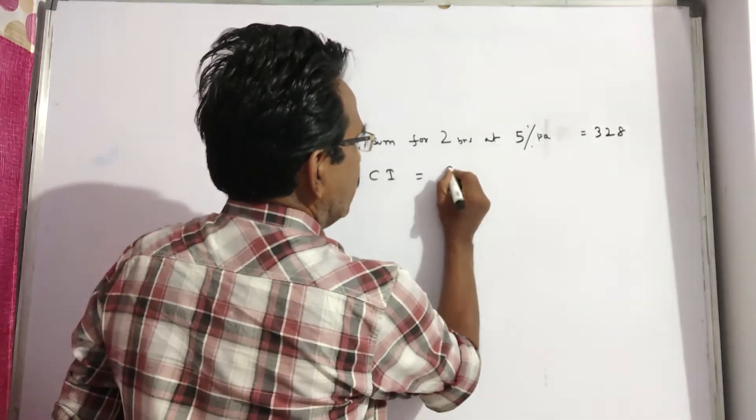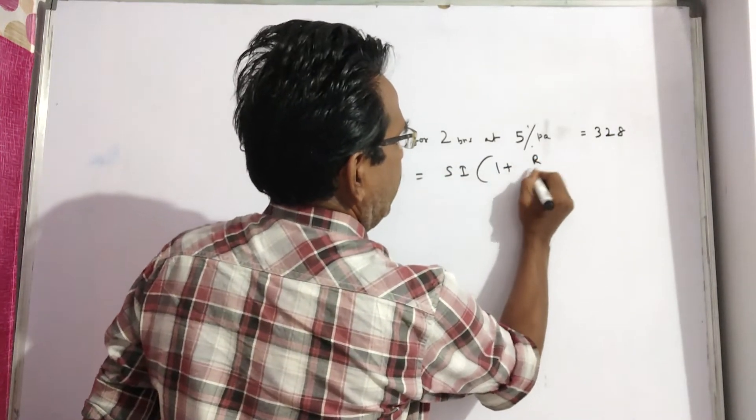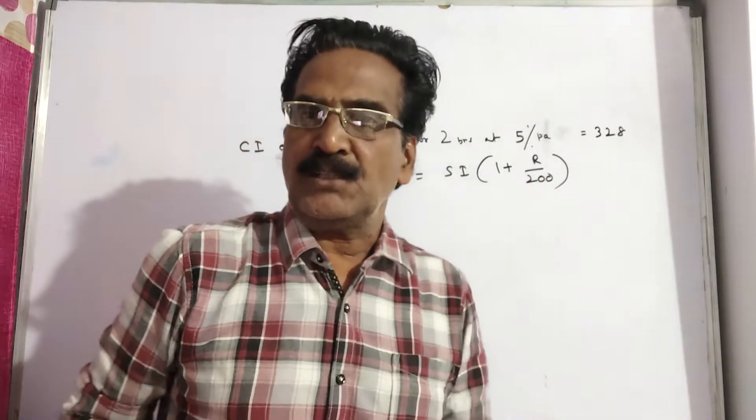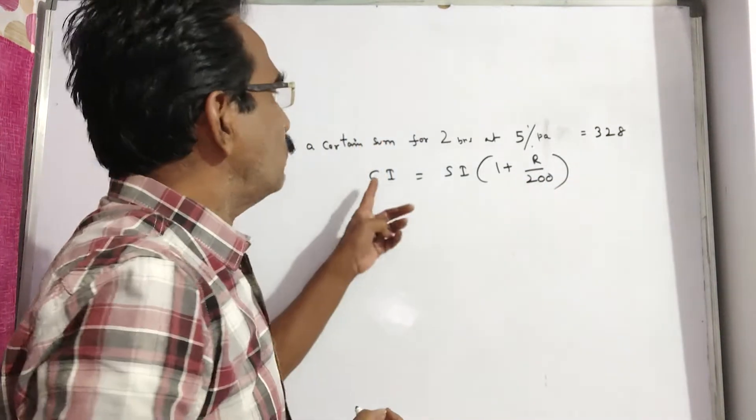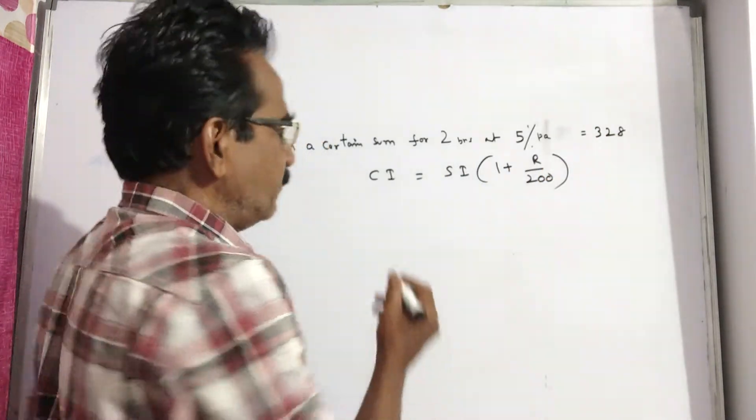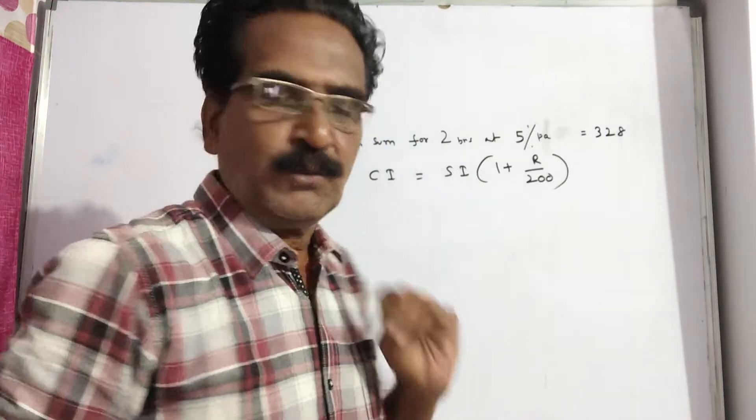CI is equal to SI into 1 plus R by 200. Now CI is given and R is given. We can find SI. This formula is applied only when T is equal to 2 years.